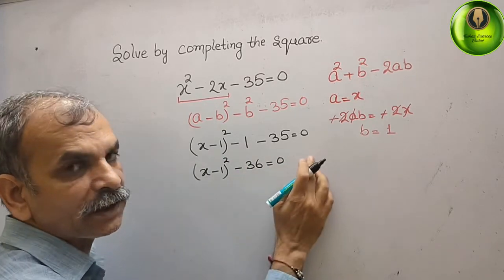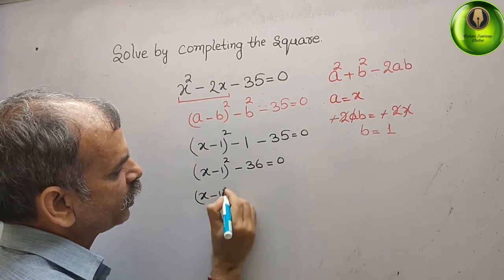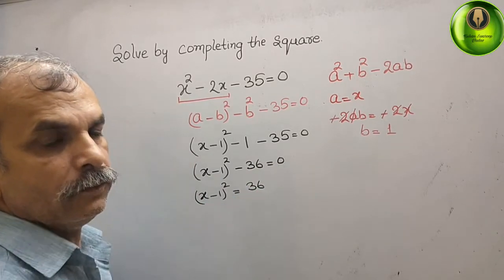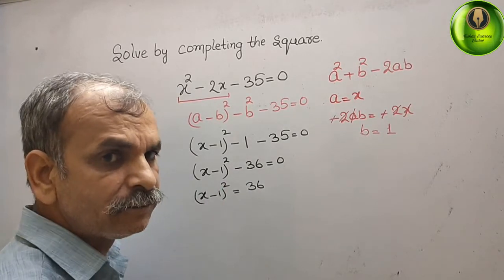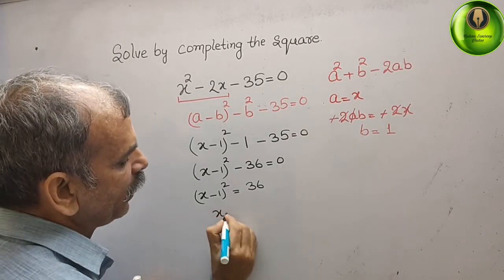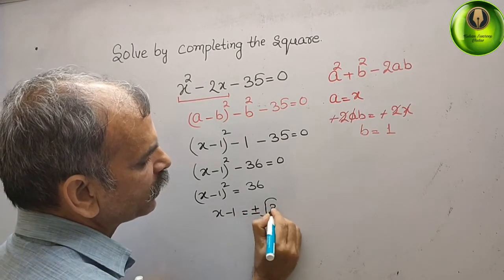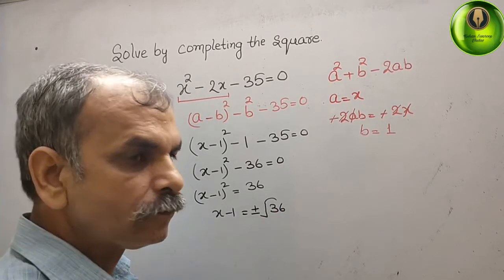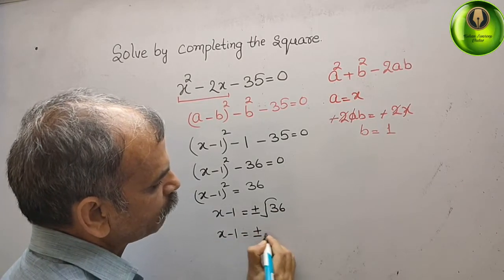Bring this minus 36 to right side, it will become plus 36. Now, your equation is this, that is equal to 36. If x minus 1 whole square is 36, what is your x minus 1? That is your plus minus root 36. That we will write, x minus 1 is equal to plus minus root 36. 36 is the perfect square of 6. We will write that x minus 1 is equal to plus and minus 6.